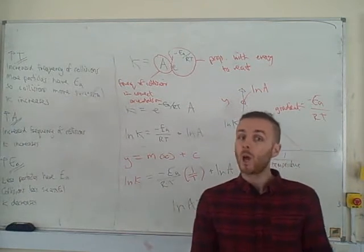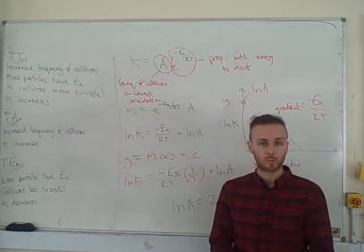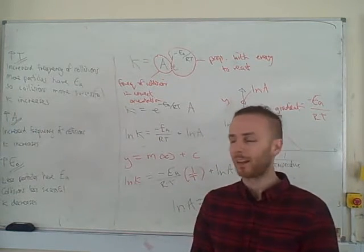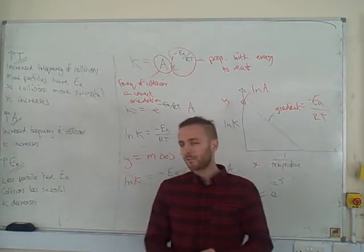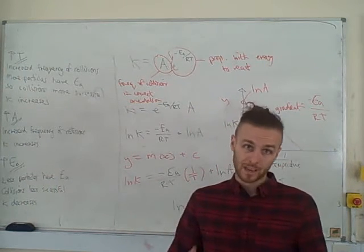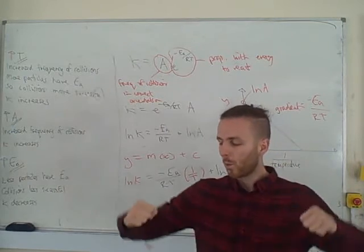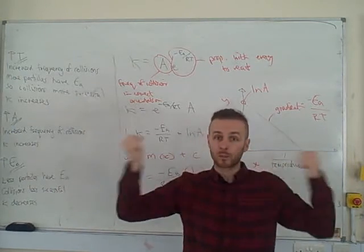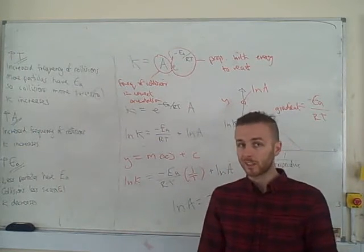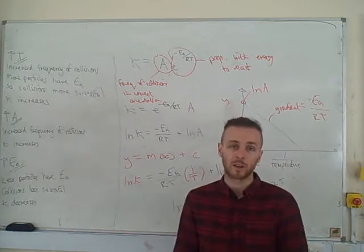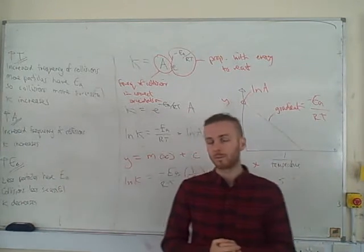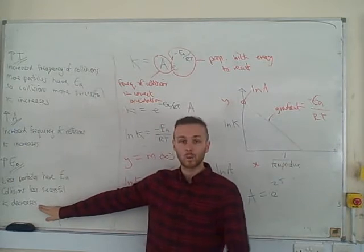And then very finally, we've got the activation energy, which can also be shown from a Boltzmann distribution. So again, go back and review that if you aren't up on that. Well, as activation energy increases, that means less particles are going to have the activation energy. So when they collide, they're just going to bounce off each other more likely. So as you increase the activation energy, less particles have the activation energy, therefore collisions are less successful, and therefore k will decrease.